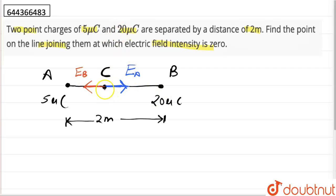Now for point C to be a null point where the electric field intensity is 0, these two electric field intensities must cancel out each other. So they must be of same magnitude. So EA must be equal to EB.